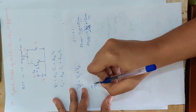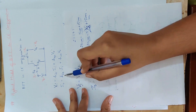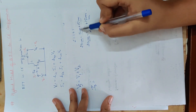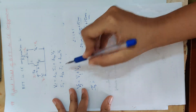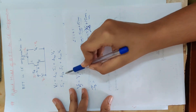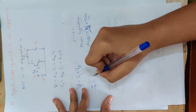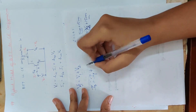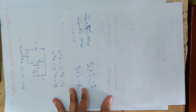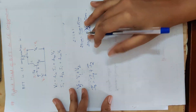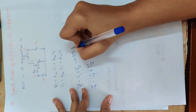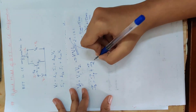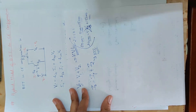IO is equal to current. The current equals HOE into VO — put into KCL. One current is HOE into VO. We apply KCL here.